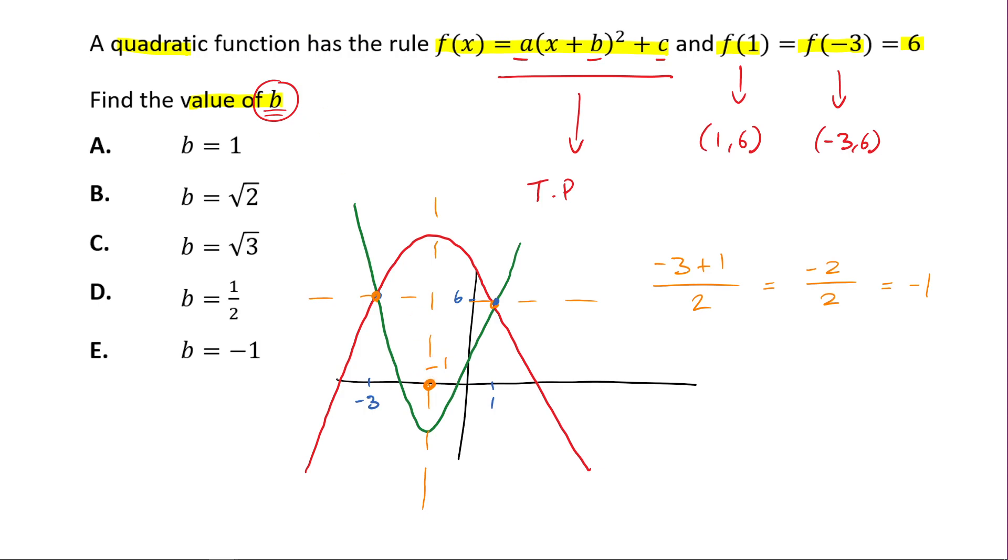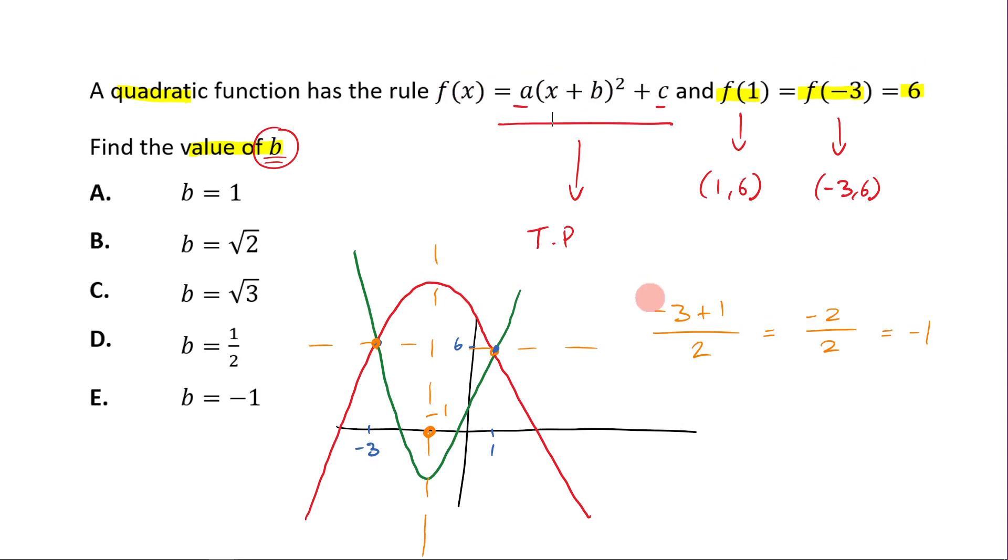Now, people at this stage will be very tempted to say, well, e is my answer, but they would be wrong. Because remember, you need to think what b would be in this scenario. And remember, if you put in plus one here, that means you're shifting one to the left. So that means your answer is actually a, b is equal to one, because that's shifting it to the left. So as you can see, you've got a lot of moving parts there. It is quite a tricky question.